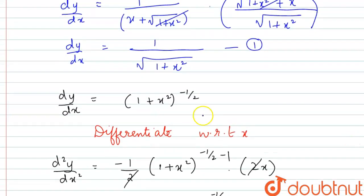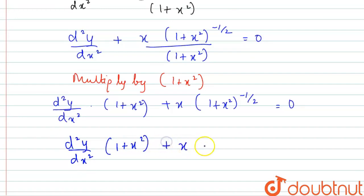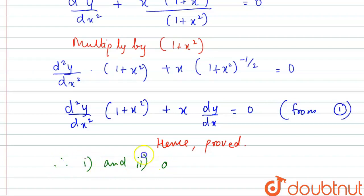From Equation 1, (1+x²)^(−1/2) equals dy/dx, so we replace it: d²y/dx² · (1+x²) + x · dy/dx = 0. This is exactly what we needed to prove. Hence proved. Therefore, both parts of the question are proved.